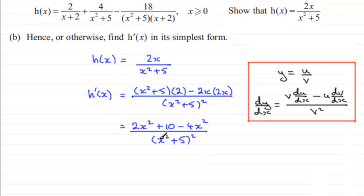If we now simplify the top we've got 10 here minus 2x squared. So 10 minus 2x squared and that's all over x squared plus 5 all squared.